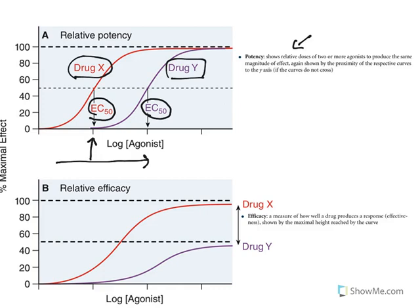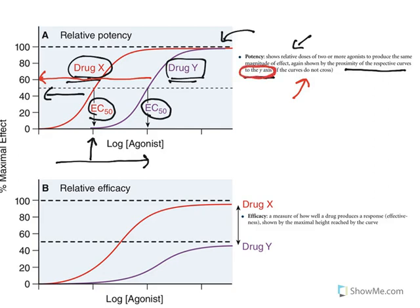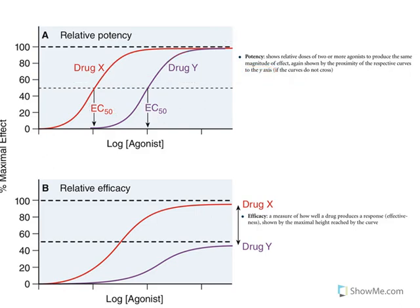Potency shows the relative doses of two or more agonists needed to produce the same magnitude of effect. Both drugs show the same magnitude of effect, but Drug X needs a lower dose. The proximity of the curve to the y-axis indicates potency — Drug X is closer to the y-axis whereas Drug Y is farther away. This is what is tested in competitive examinations: a more potent drug's curve will be closer to the y-axis.